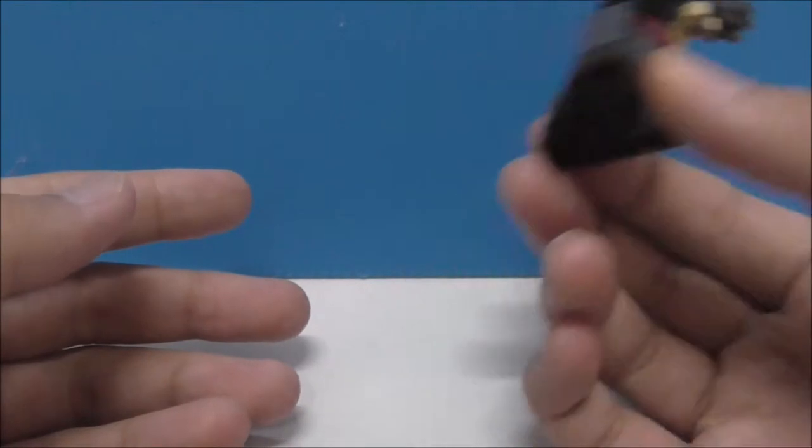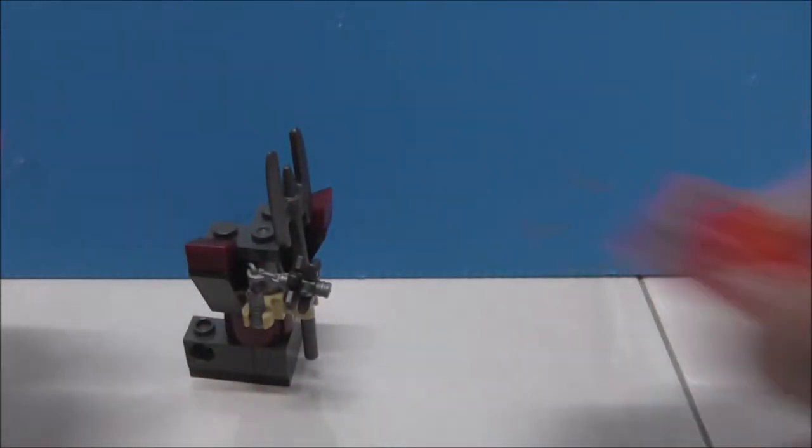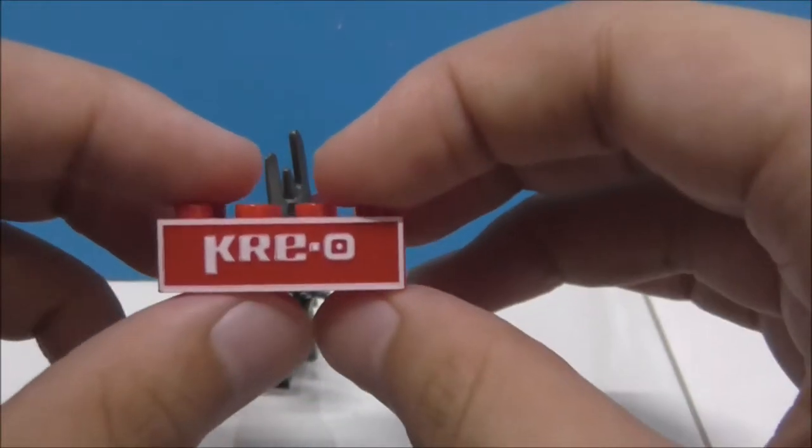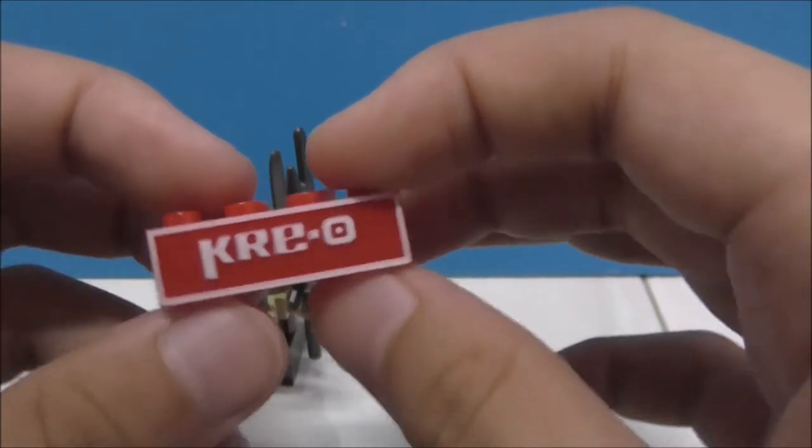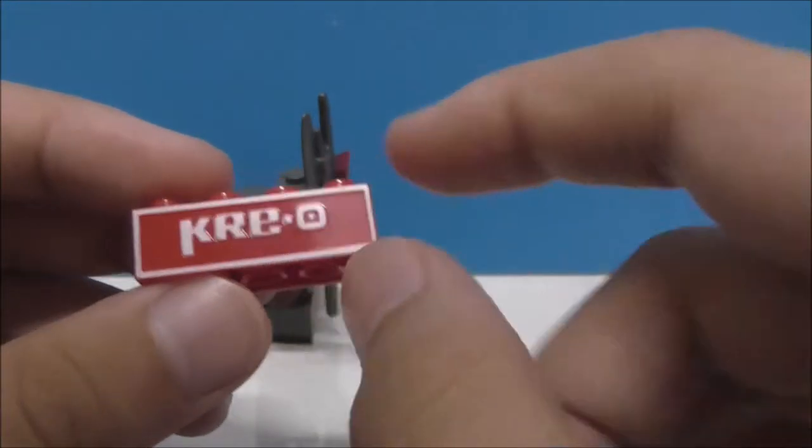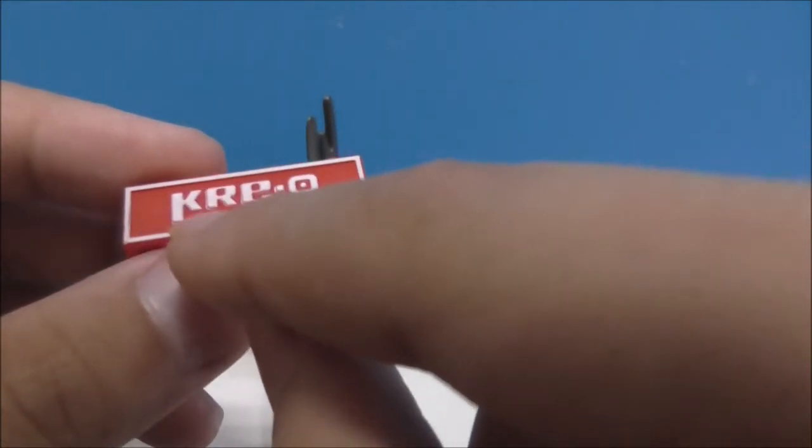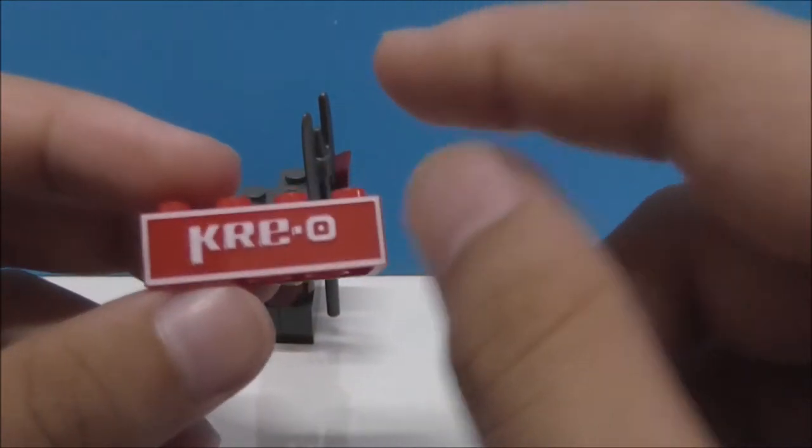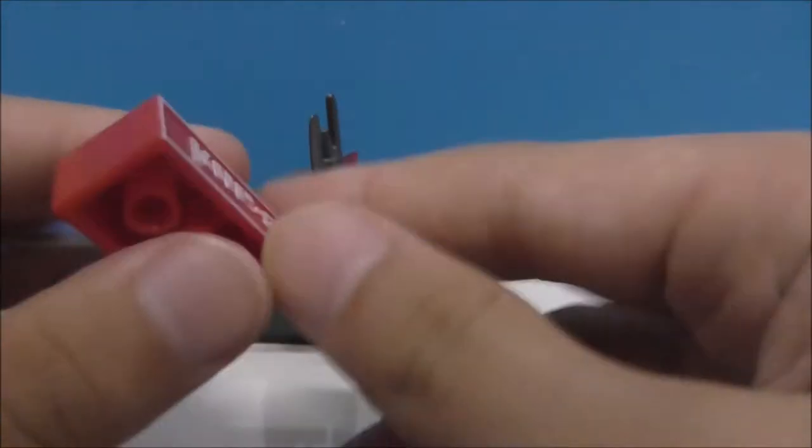Lastly, this set also comes with a Kre-O brick. I forgot what it's called, but it comes in every set of Kre-O. It's just a pretty simple brick. That's it for all the builds.